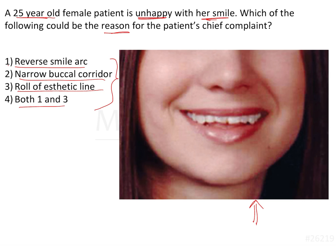Looking at this image, the smile is clearly not very aesthetic. The crown is not fully visible — only from the middle third to the incisal third of the central incisors is visible. There also appears to be a space between the incisal edge of the maxillary anteriors and the curvature of the lower lip, giving it a very unaesthetic look. The incisal edges from canine to canine curve in the opposite direction to the lower lip curvature — this is a reverse smile arc.